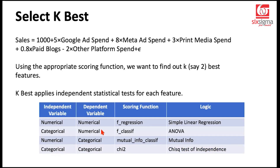In select k-best, you check how every single variable is associated with the target based on some logic. If you have a mix of variable types — some categorical and some numerical — you can segregate them by their nature, apply the appropriate scoring function, get a ranking, and identify the features you want to retain.